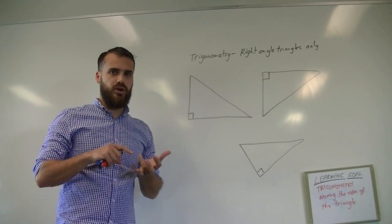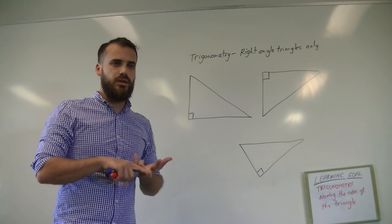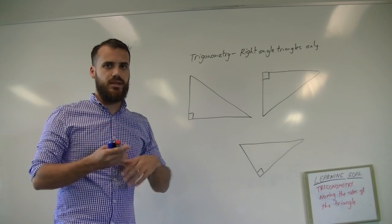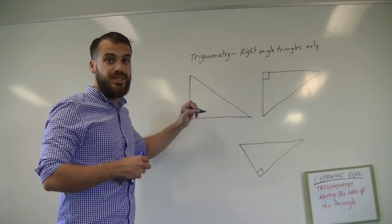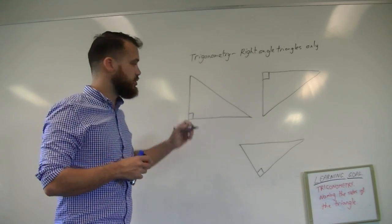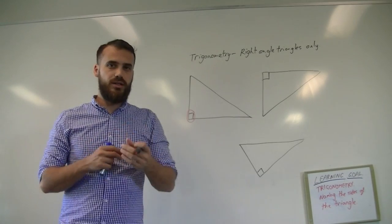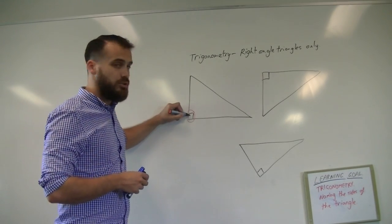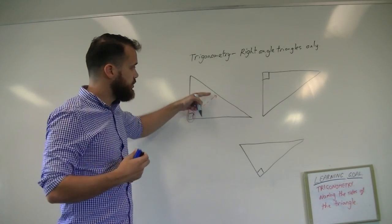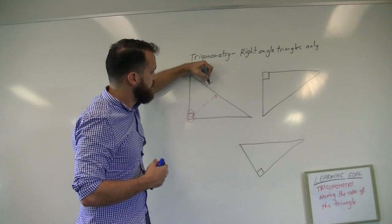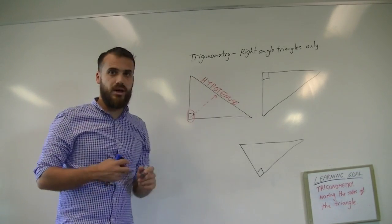There are three sides to a right angle triangle: the hypotenuse, and then we'll look at opposite and adjacent as well. Finding the hypotenuse is always the easiest, and that never changes. The hypotenuse is the longest side and is also the one that's opposite the right angle. The procedure for finding it is really simple: start at the right angle and draw a little arrow to the opposite side — that side is called the hypotenuse.